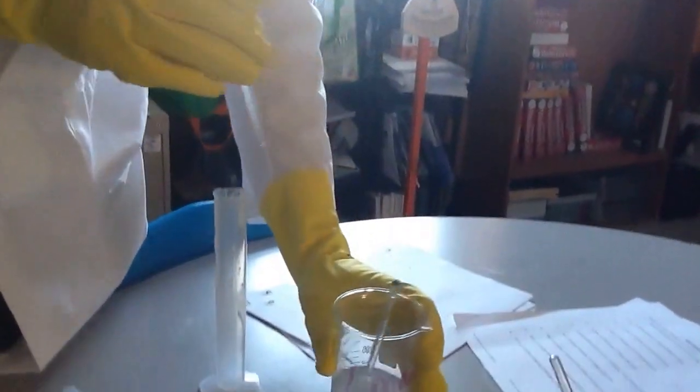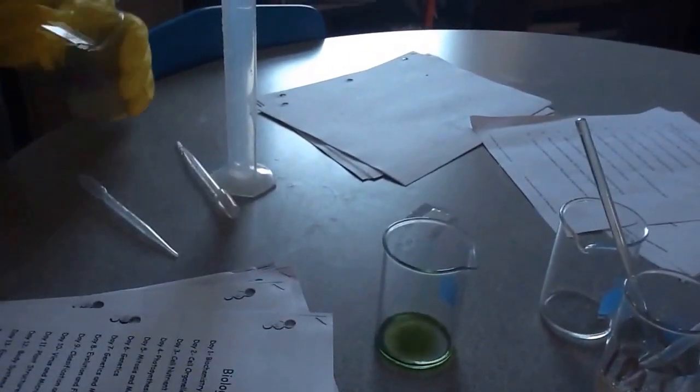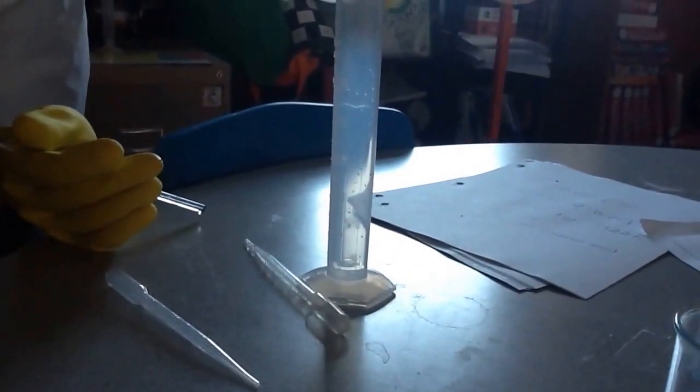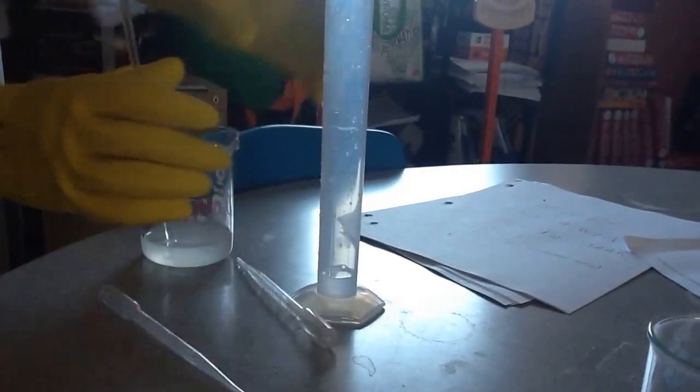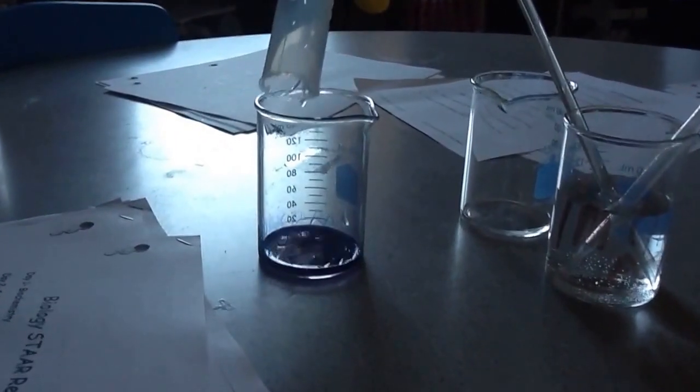We're going to do NaOH in the first beaker. That's in green. I'm going to add approximately five milliliters. So over here, five milliliters of NaOH will go in the green. You notice the color change, right?